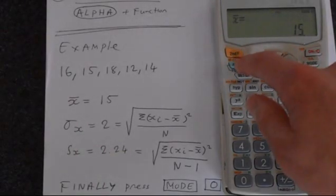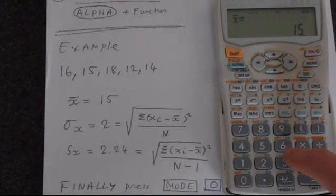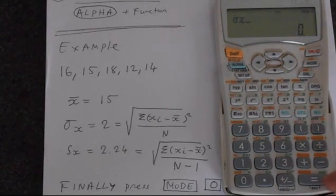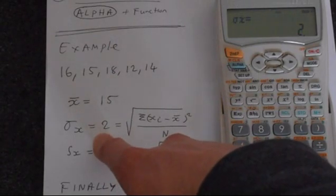So we'll start with the sx. Simply press alpha. Then the sx is above number 6. So press alpha and then 6. Then equals and we get 2, which is what you would expect.